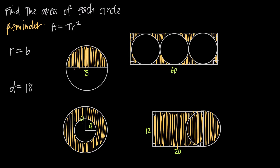In this video, we're going to be doing a couple examples about how to find the area of a circle. Whenever we want to find the area of a circle, we always use the formula A, or area, is equal to pi r squared, where r is the radius of the circle.